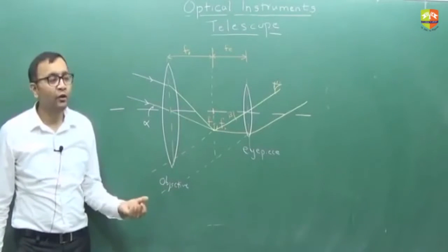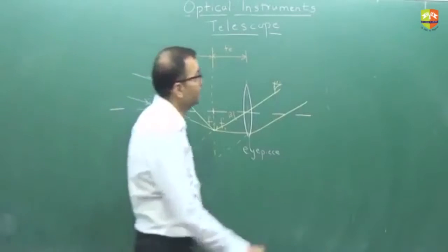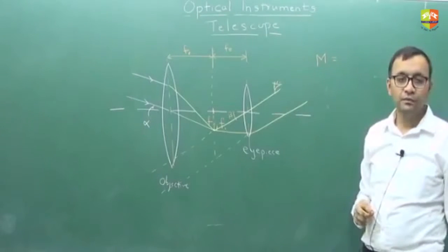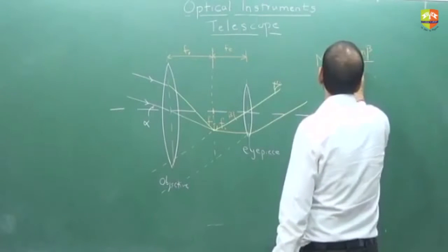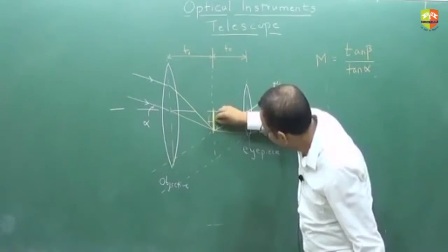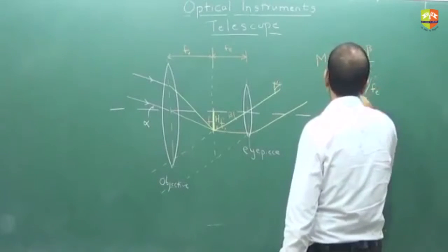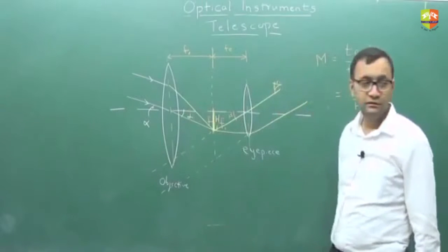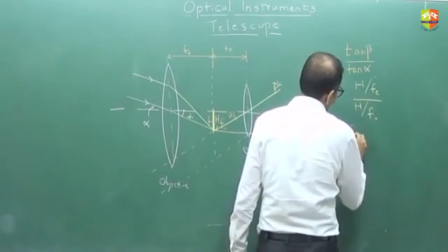Here we define angular magnification. The angle for the image is beta and for the object is alpha. So magnification equals tan of beta divided by tan of alpha. If this distance is h, then tan of beta is h by fe, and tan of alpha is h by fo. So h and h get cancelled. Magnification equals fo by fe.